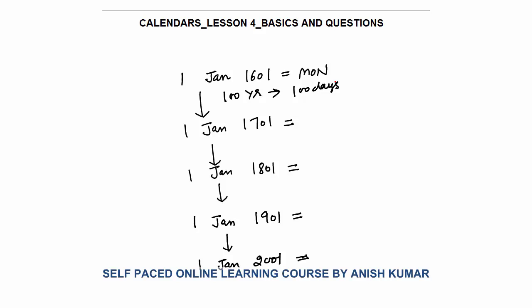So how many times does 29th February come? The first 29th February will come on 1604, then 1608, and so on till 1696. Year 1700 will not be a leap year, because a century year is a leap year only if divisible by 400. So from 1604 to 1696, this is like 4×1, 4×2, and so on.